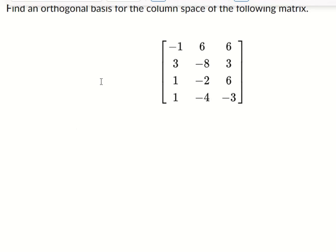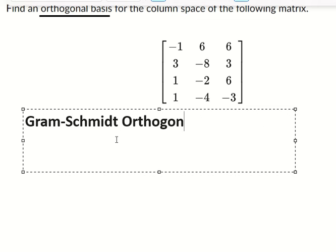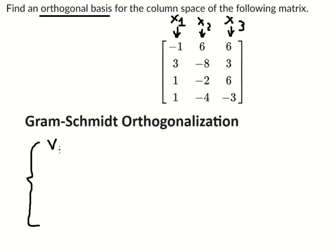Hello everybody. Today I want to show you how to find an orthogonal basis. To answer this we apply the Gram-Schmidt formula. We have S1, S2, and S3. The formula gives us: v1 equals S1.